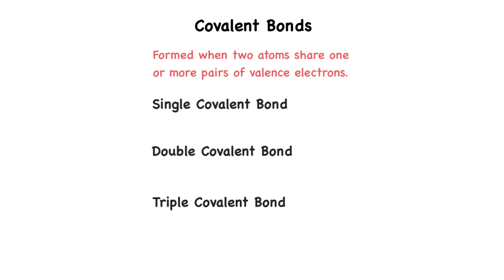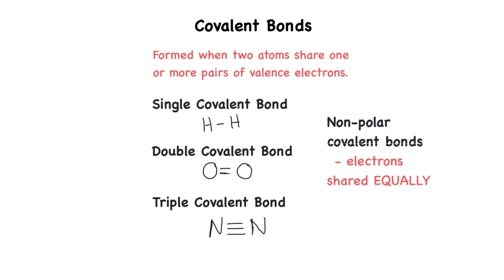In a single covalent bond, only one pair of electrons are shared, such as when hydrogen binds to hydrogen. In a double covalent bond, two pairs of electrons are shared — this occurs mostly with the elements carbon, nitrogen, oxygen, and sulfur. An example would be when oxygen binds to oxygen. In a triple covalent bond, there are three pairs of electrons shared, occurring mostly between carbon and nitrogen, such as when nitrogen binds to nitrogen. These are all examples of non-polar covalent bonds because the electrons are shared equally.